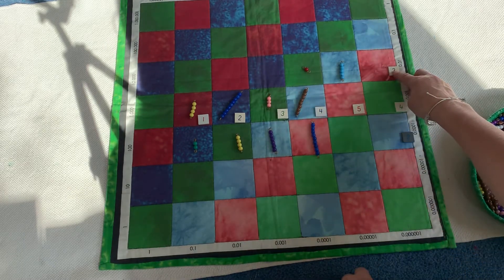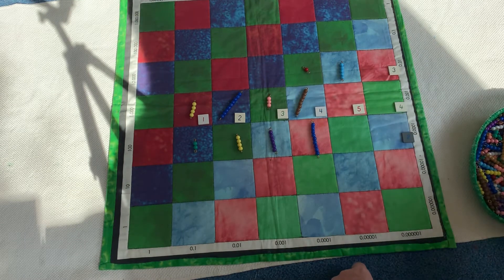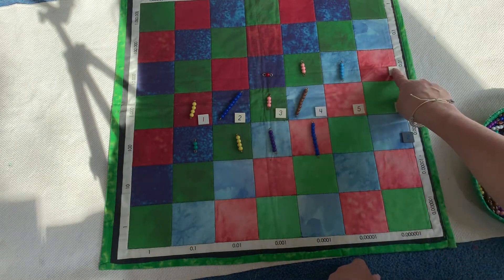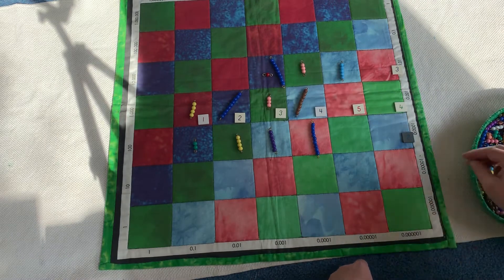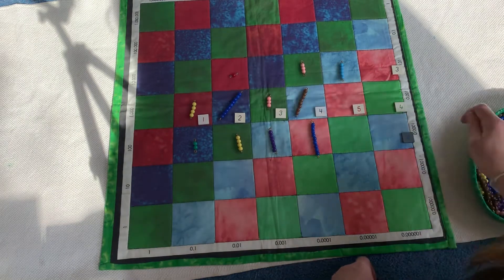Four times three is 12, plus this one is 13. Three times three is nine. Oh, but I see this one here. So nine plus one is 10. So I'm just going to scoop that over.